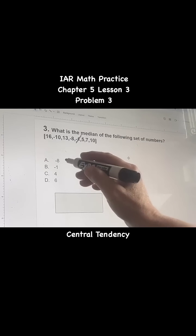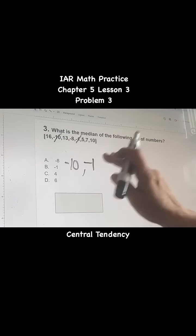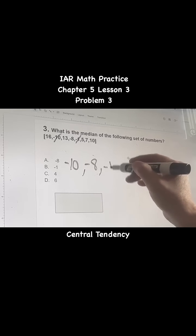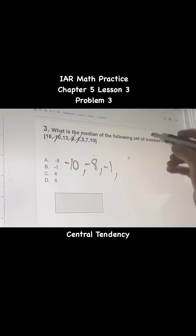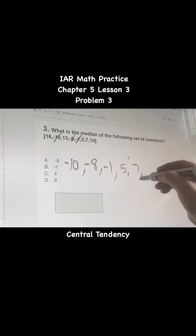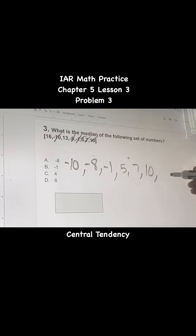Negative 1, you have a negative 10, I didn't see that, sorry. Let's do the negative 8, negative 1. And what do we have? 5, 7, 10, 5, 7, 10, 13, and 16.